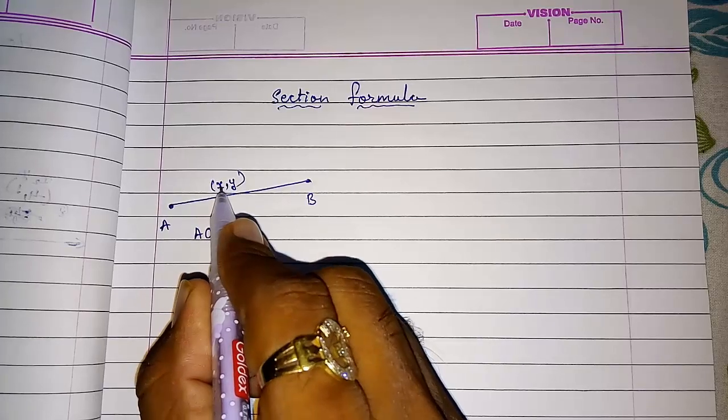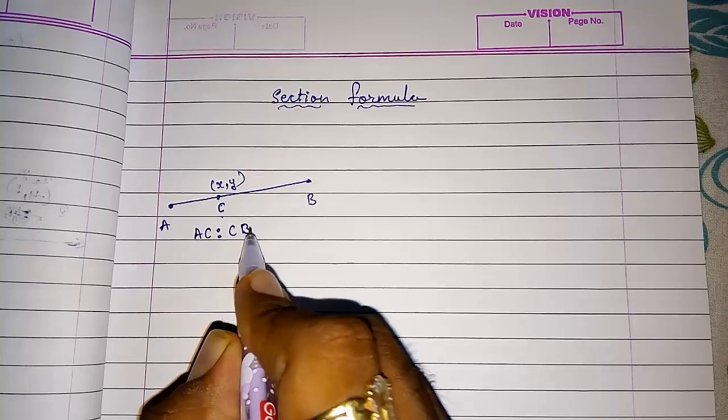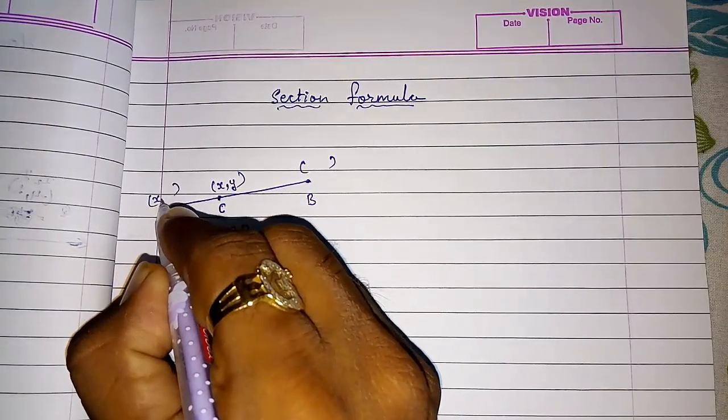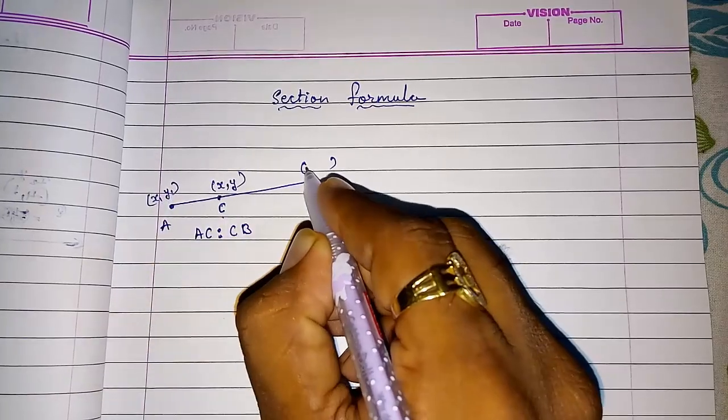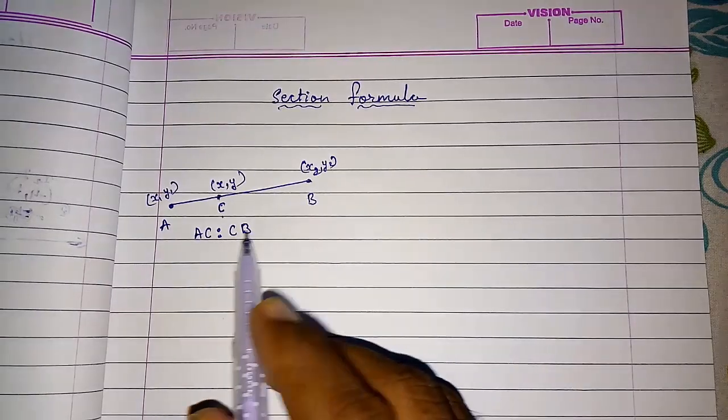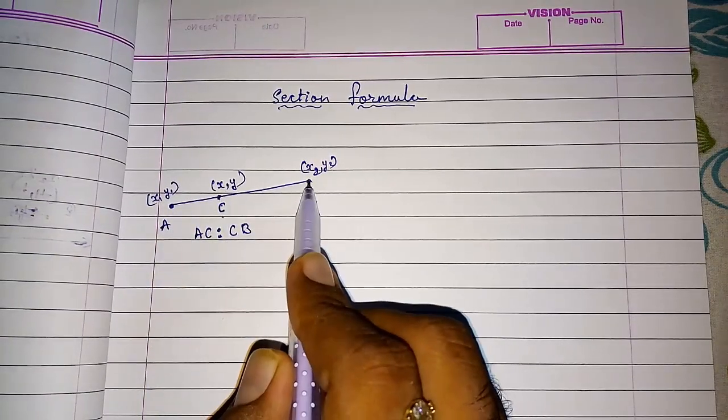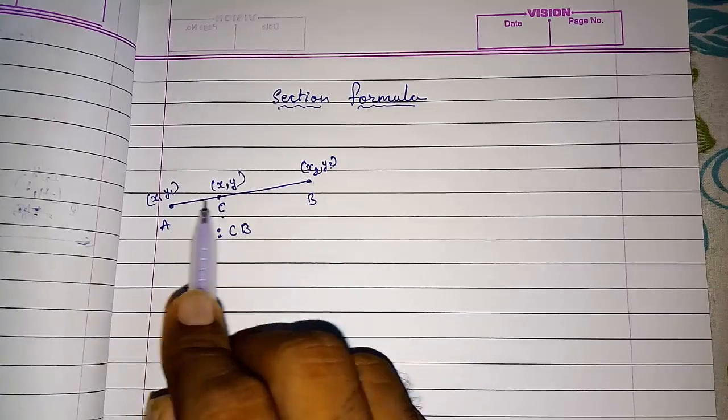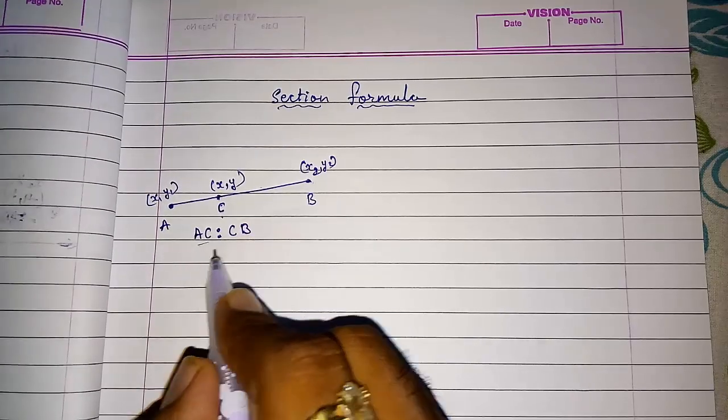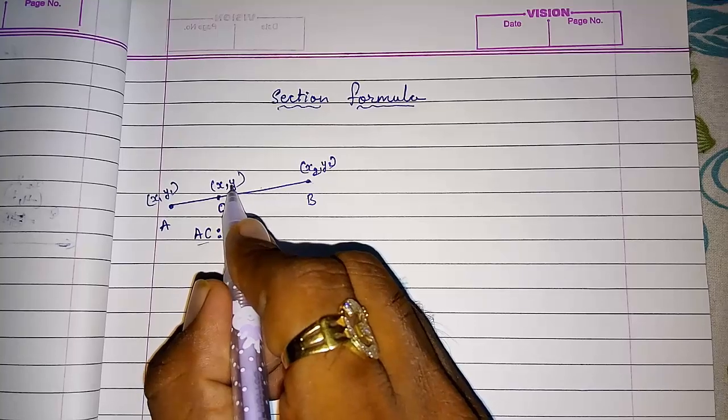The coordinate of this point is X, Y and the ratio of this point is AC is to CB, and the coordinates of these two points are X1, Y1 and X2, Y2. This point C divides this line AB into two parts. So if it is in two parts, we can find the ratio of the two parts. Here the ratio is AC is to CB and the coordinate of that point C is X and Y.